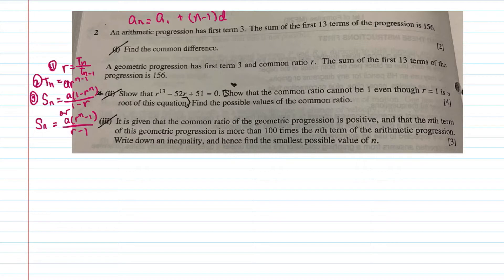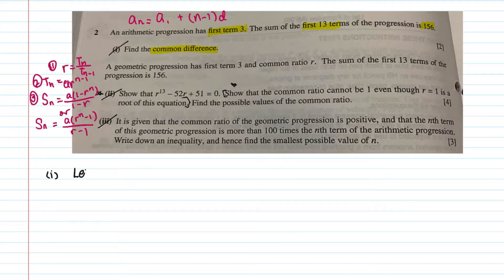The question goes: an arithmetic progression has the first term as three, so you know that a equals three. Remember that a always stands for your first term. The sum of the first 13 terms of the progression is 156. Find the common difference. Part one is very simple. Let d be the common difference.